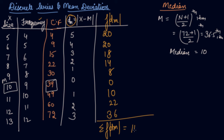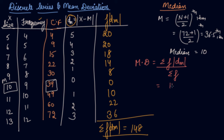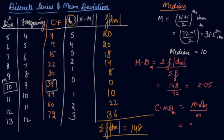You have got the sum as 148. So you find out mean deviation with the formula: summation of F×|D| divided by summation of F. That is 148 divided by 72, so your mean deviation using median comes out to be 2.05. The coefficient of mean deviation using median will be mean deviation divided by median: 2.05 divided by 10 equals 0.205.